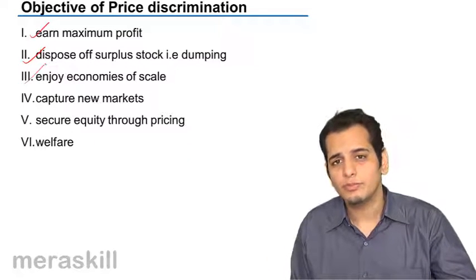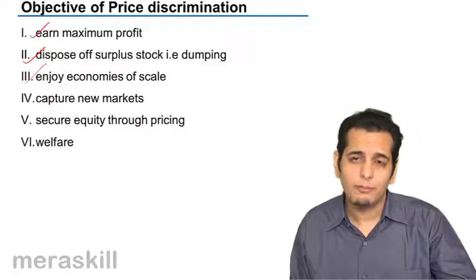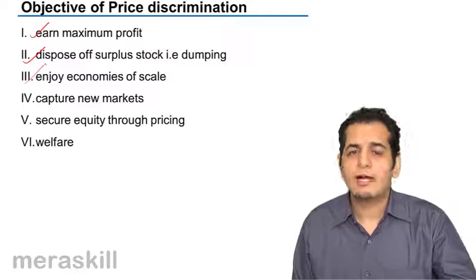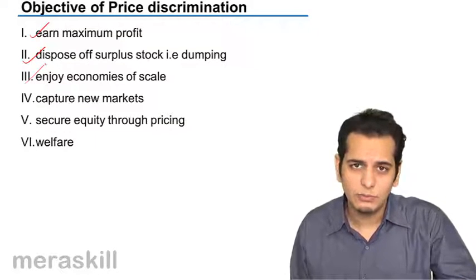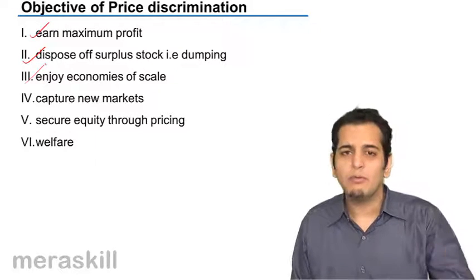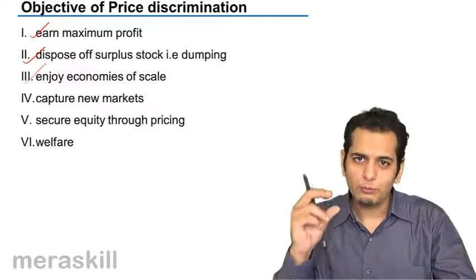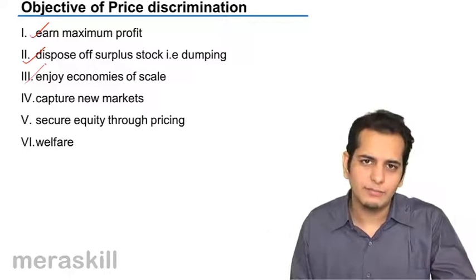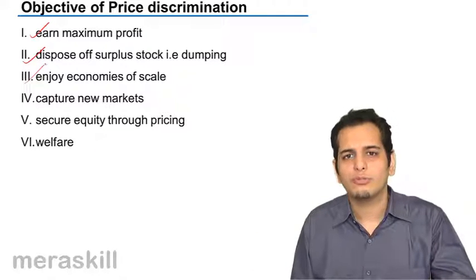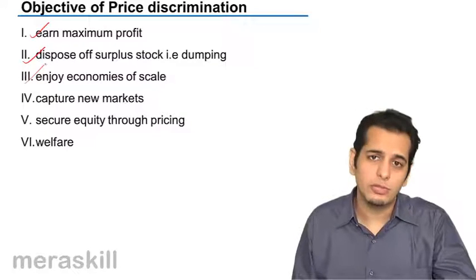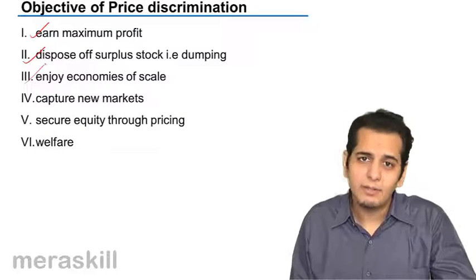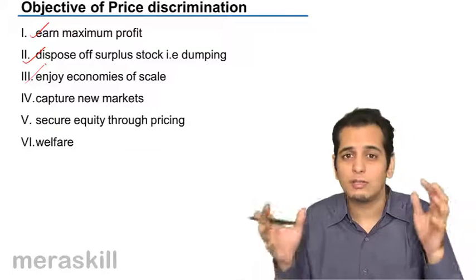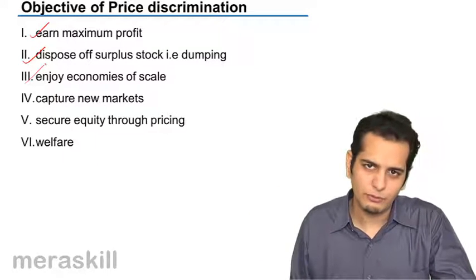Third, enjoy economies of scale. If a buyer is buying more from him, he will be ready to sell at a lower price. Because if he is selling more, he will be able to produce those goods at a lower cost — as the quantity of goods increases, his overall cost comes down. So a person who is purchasing in bulk will get the benefits of economies of scale, and the monopolist himself will also get the benefits of economies of scale.